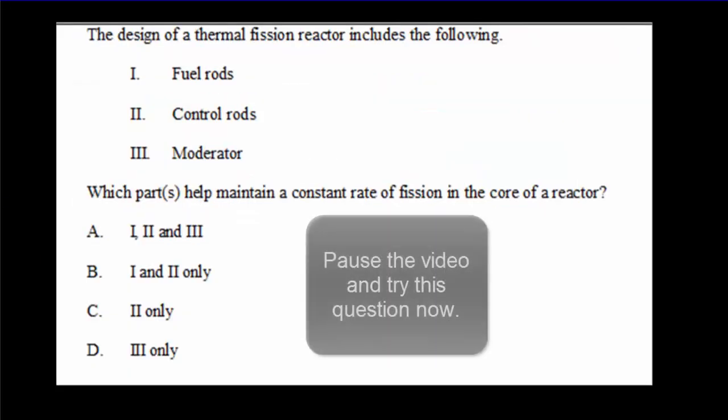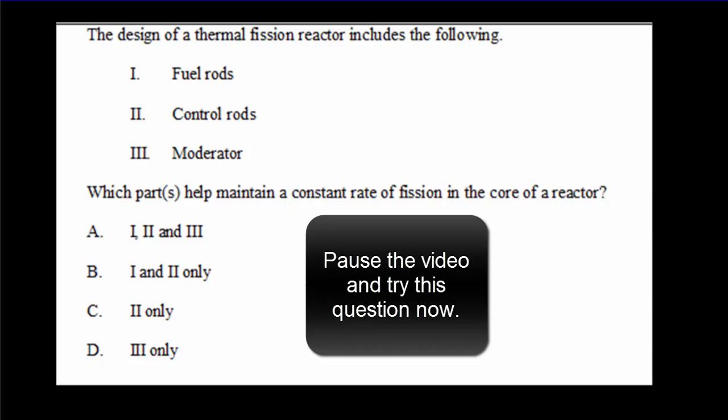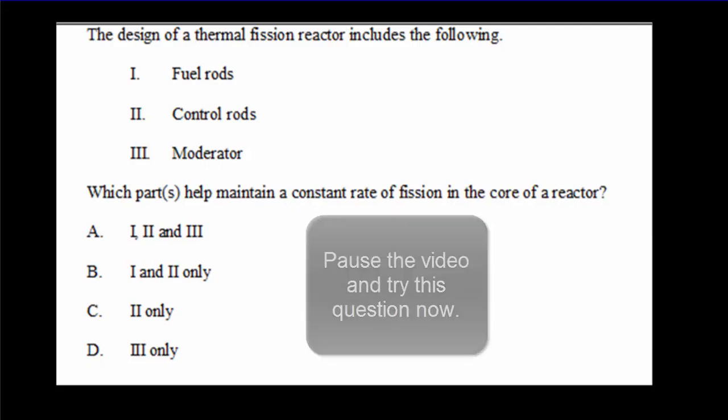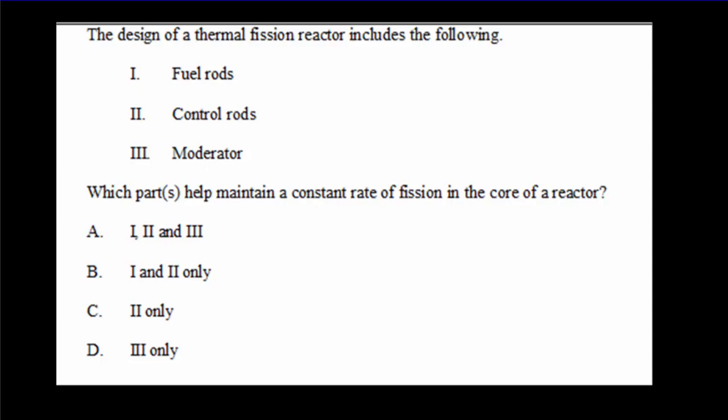Here's a second question. Pause the video, read it over, try it out for yourself and come back for the answer. Turns out the IB accepted two different answers for this one. They accepted either A or C. So you could either think of this as a system that maintains a constant rate of fission, or the active piece of that is the control rods, which you can slide up and down, and thereby control the rate of fission.